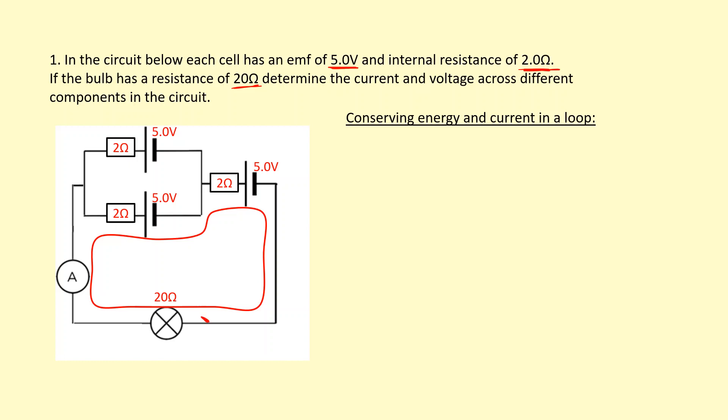First, I need to define the current. There's a current i flowing through here, so the current through here will also be i. However, this branch is going to split up evenly because they're identical cells. There's going to be i over 2 flowing through the bottom branch and i over 2 through the top branch, and then it joins back up to i again.